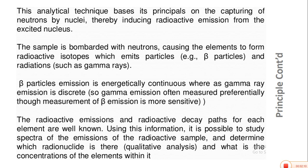Beta particle emission is energetically continuous whereas gamma ray emission is discrete. Gamma emission is often measured preferentially because measurement of beta emission is more sensitive but less specific. Discrete means there is a particular pattern to the gamma radiation emission, but beta radiation is continuously emitted with no particular spectral pattern. Therefore, nuclear analytical chemists prefer to measure the gamma spectra to analyze elemental concentration and kind.